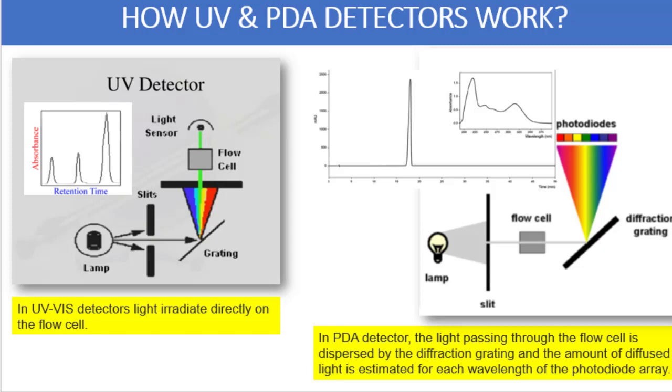This PDA detector is also a very useful tool in proving whether the peak is spectrally pure or whether the peak is spectrally not pure. This tool is used specifically during method validation to prove that the method used is stability indicating in nature.